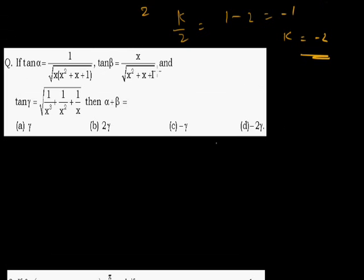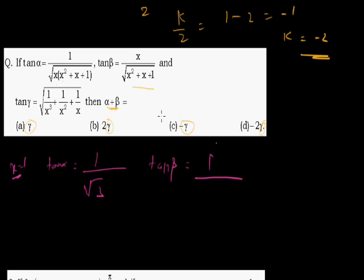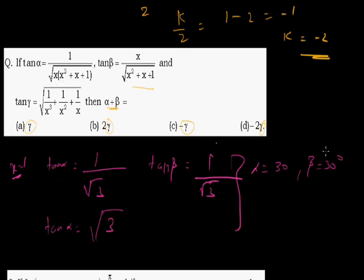Next problem: tan α = 1/(x² + x + 1) and tan β = x/√(x² + x + 1), and tan γ is given. Find the value of α plus β in terms of γ. Put x = 1. Then tan α = 1/(1 + 1 + 1) = 1/√3, so α = 30°. And tan β = 1/√(1 + 1 + 1) = 1/√3, so β = 30°. Similarly, tan γ = √3, so γ = 60°. Can I say α plus β = 30° plus 30° = 60° = γ? Yes. The answer is A.